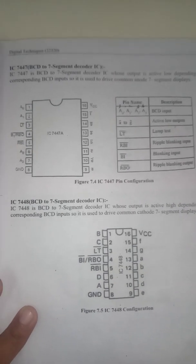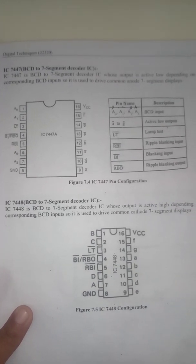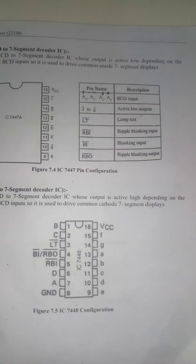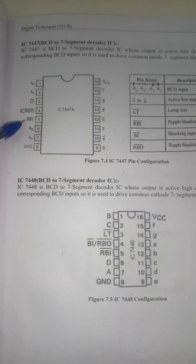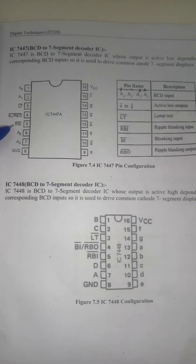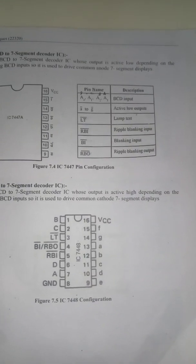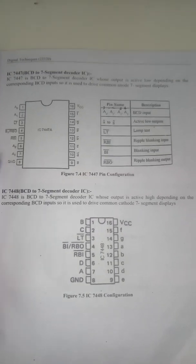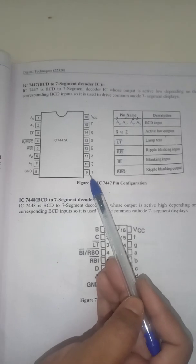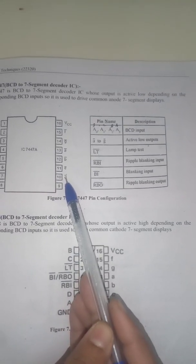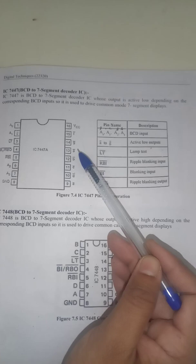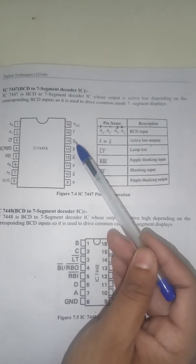Pin number 3 is LT bar, that is Lamp Test, which is an active low signal. Pin number 4 is BI/RBO bar, an active low signal that is the ripple blanking output. Pin number 5 is RBI bar, the active low ripple blanking input. Pin number 8 is ground. Pin number 9 is E bar, pin 10 is D bar, pin 11 is C bar, pin 12 is B bar, and pin 13 is A bar.